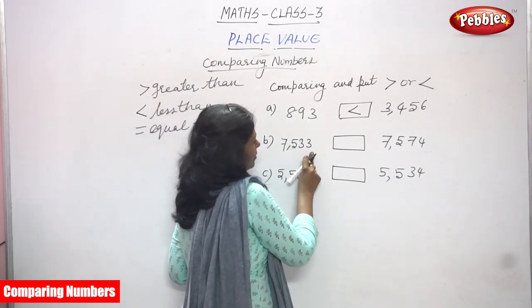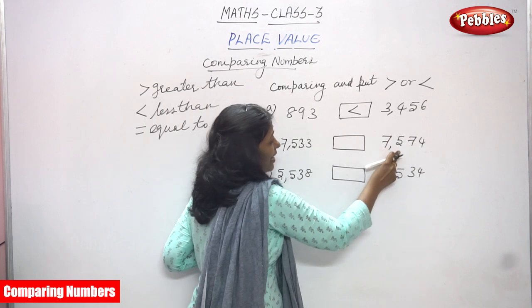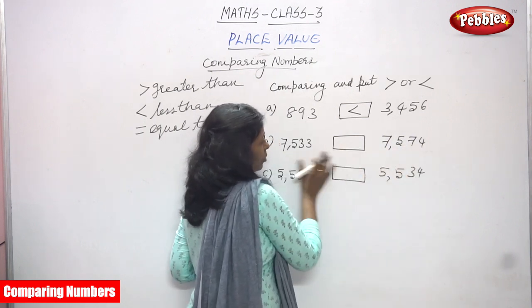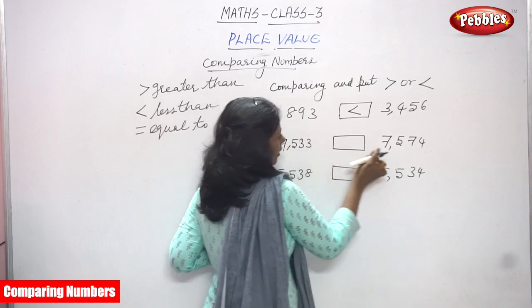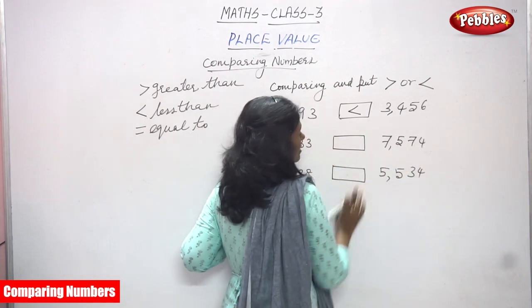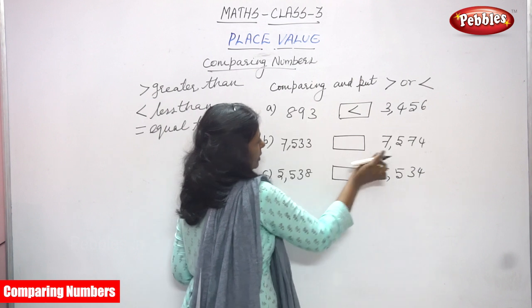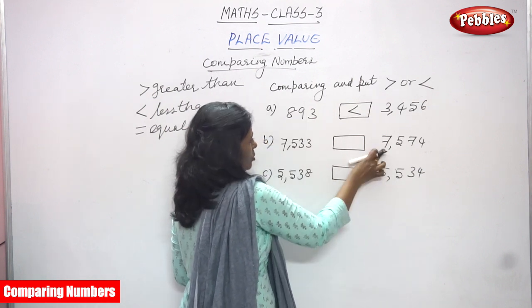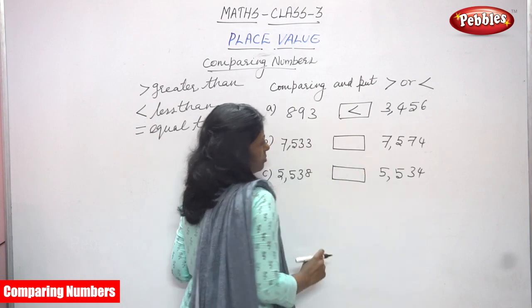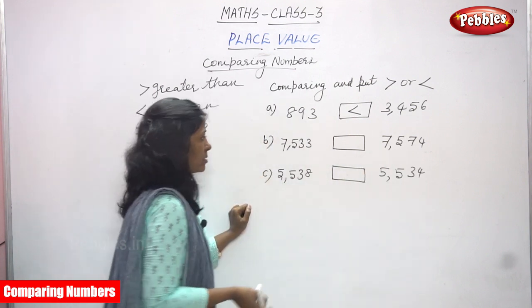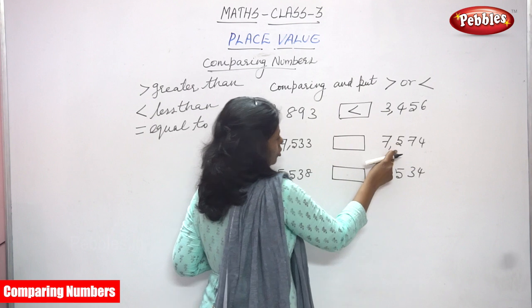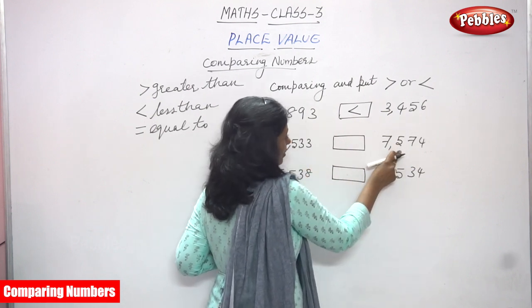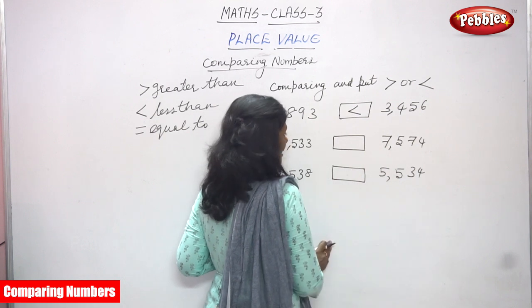Next, 7533 compared with 7574. Both are four-digit numbers. First you have to compare the thousands place — both have 7, so 7000 here and 7000 there. We move to the next digit: hundreds. This is 500 and this is also 500 — both numbers have the same hundreds.